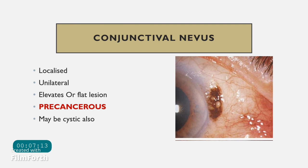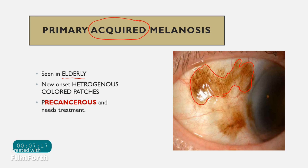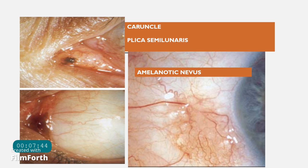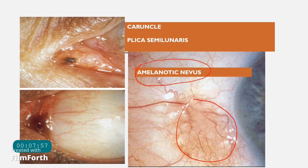The conjunctival nevus is a localized lesion — unlike primary acquired melanosis, which is flatter and more diffuse. It is usually unilateral, sometimes elevated, sometimes flat, and can be cystic. It can be blackish or completely amelanotic (no melanin present). The nevus can appear in the caruncular area, plica semilunaris, limbal area, or perilimbal conjunctiva, and is generally pre-cancerous, requiring treatment.